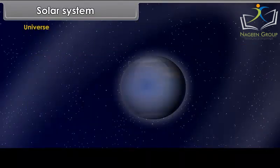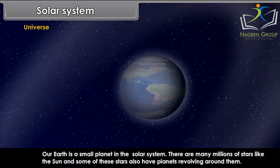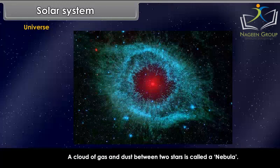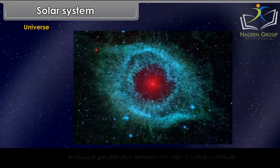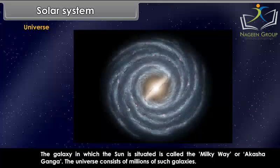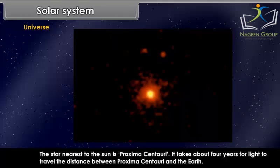Our Earth is a small planet in the solar system. There are many millions of stars like the sun, and some of these stars also have planets revolving around them. A cloud of gas and dust between two stars is called a nebula. Our sun and all its family members have evolved from nebular matter. Millions of stars like the sun are grouped together to form a galaxy. The galaxy in which the sun is situated is called the Milky Way or Akash Ganga. The universe consists of millions of such galaxies. The star nearest to the sun is Proxima Centauri, and it takes about four years for light to travel the distance between Proxima Centauri and the Earth.